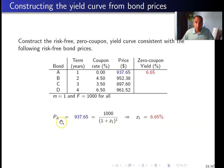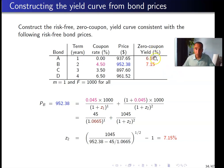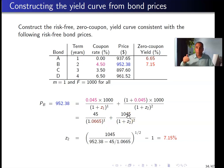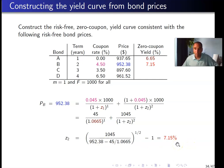The first bond, Bond A, pays $937.65 in one year. Discounting at the one-year rate, the one-year zero coupon yield must equal 6.65%. For the second year, the price of Bond B is $952.38. It pays one coupon in one year and face value plus coupon in two years. The first coupon is discounted at the one-year zero coupon yield of 6.65%, and the face value plus coupon in two years is discounted at the two-year zero coupon yield Z2. Solving one equation with one unknown gives a two-year zero coupon yield of 7.15%.